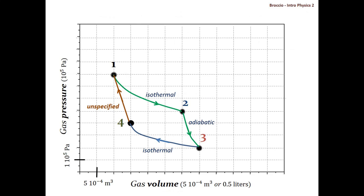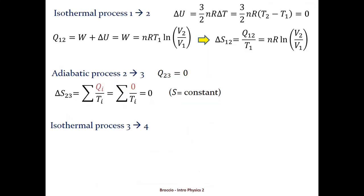Next there is an isothermal compression from 3 to 4. For the isothermal process from 3 to 4, the internal energy is constant, delta U equals zero. So using the first law of thermodynamics again, the heat exchange going from 3 to 4 is equal to the work done on the gas: nRT3 logarithm of V4 over V3.